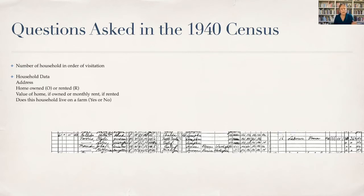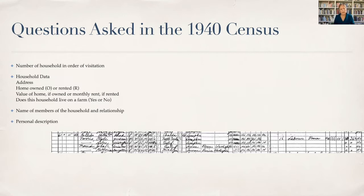The questions in the 1940 census covered the number of households in order of visitation, things about your house — whether you owned or rented, the value of your home, whether you lived on a farm or not — the members of your family and the relationship, which was helpful. A personal description including race, gender, education, where you were born, citizenship, employment status, income — all kinds of things.